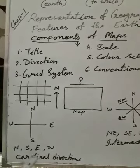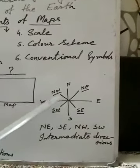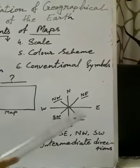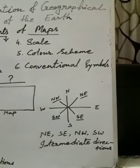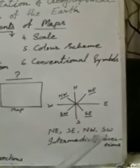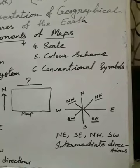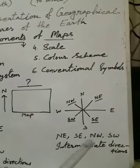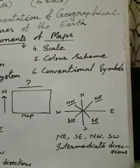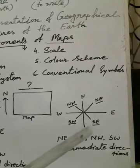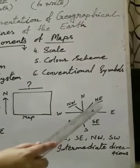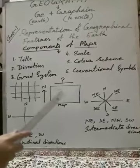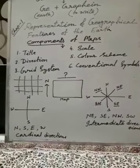After cardinal directions, four more important directions we have: in between north and east we get northeast; in between south and east, southeast; in between north and west, northwest; and in between south and west, southwest. These four are called intermediate directions, and here also you must maintain the arrangement: always write northeast first, then southeast, then northwest, then southwest. They are called intermediate because northeast, for example, is located in between north and east. These four directions also help us to locate any place on the map.